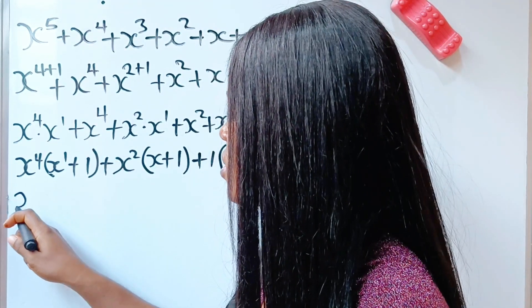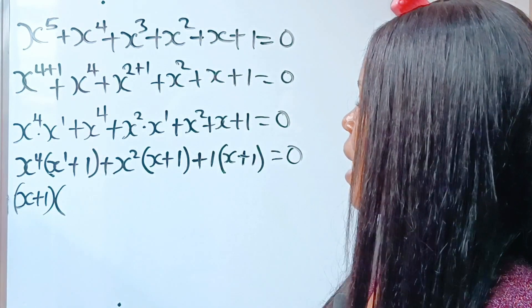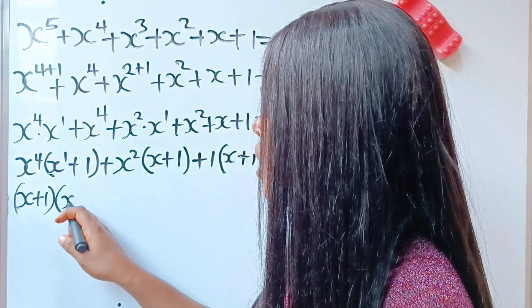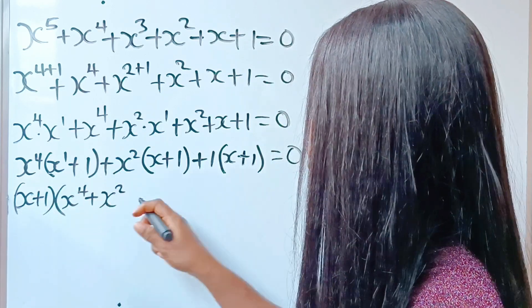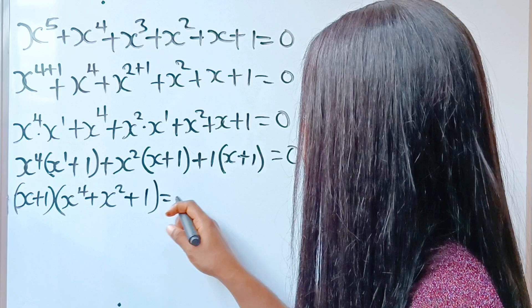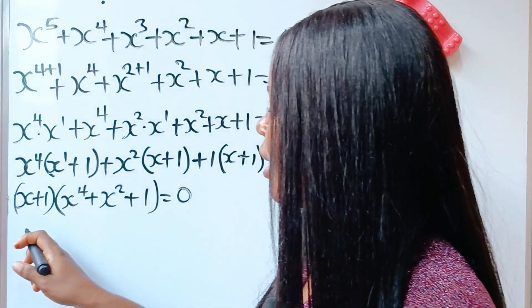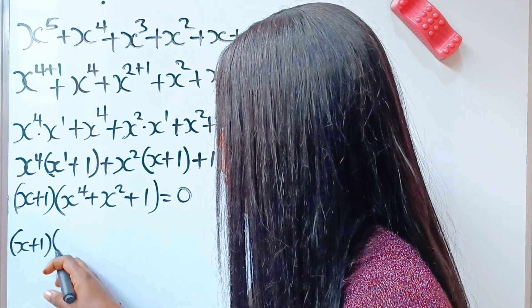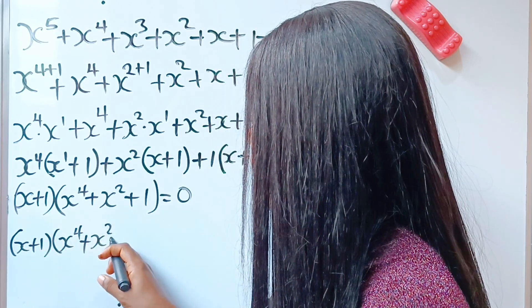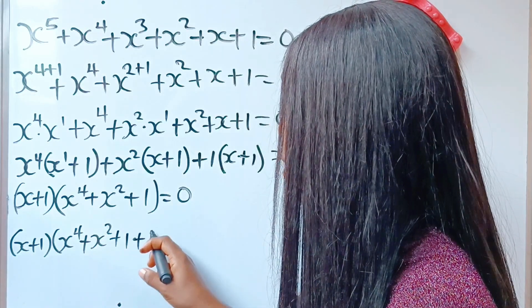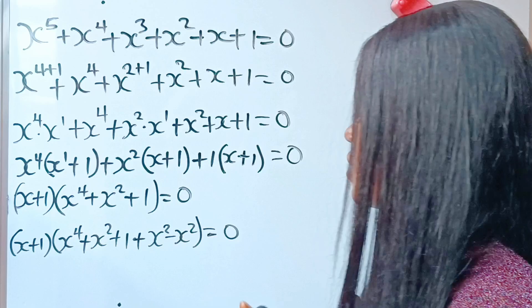So, we are going to bring that out — x plus 1 — multiplied by, we are going to bring x to the power of 4, plus x squared, plus 1 out as well. This is equal to 0. So, we have x plus 1 brackets x to the power of 4 plus x squared plus 1. Now, let's introduce x squared minus x squared. Is equal to 0.